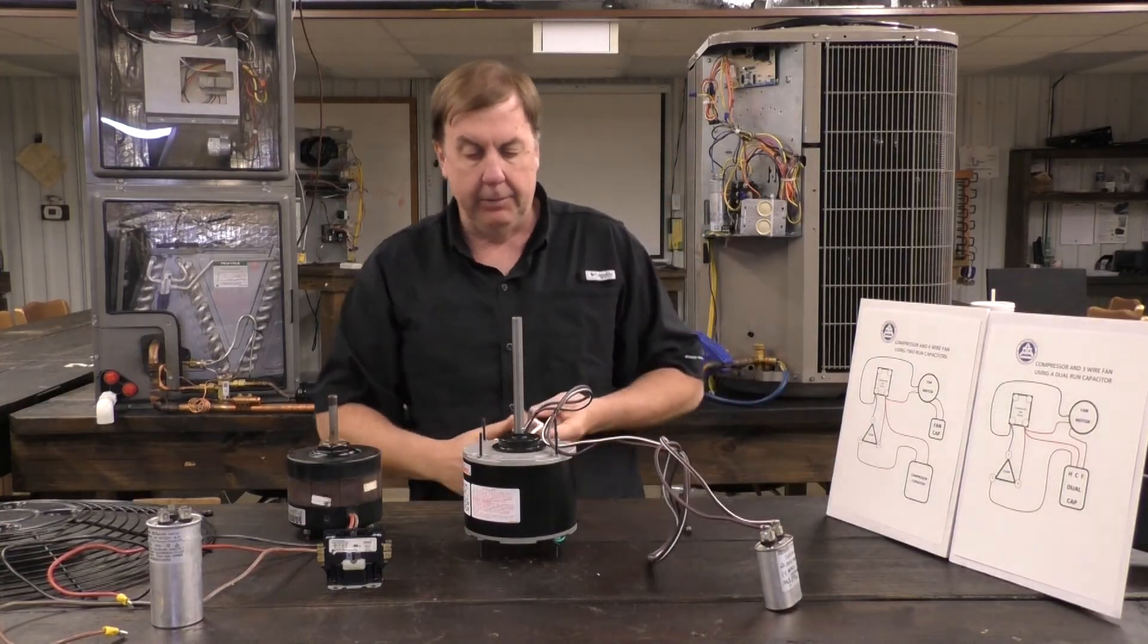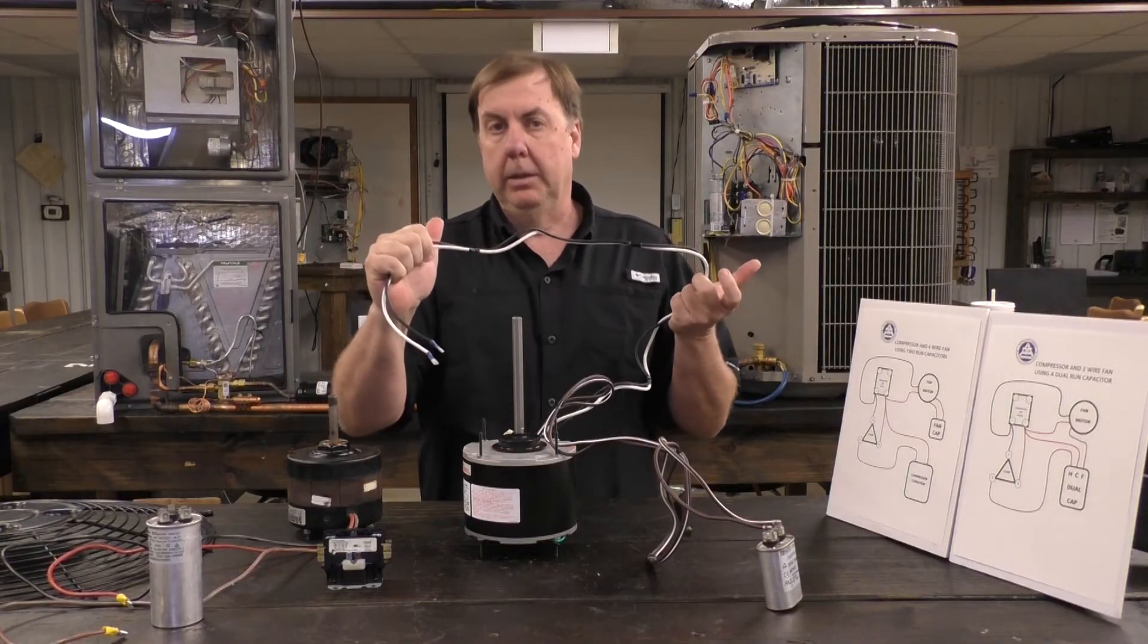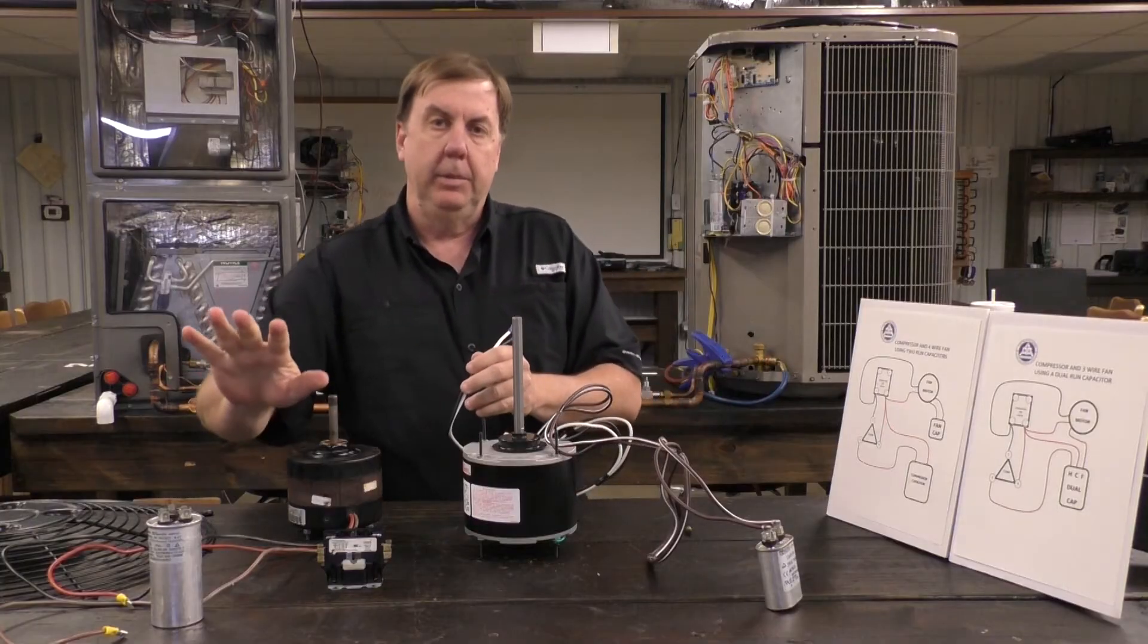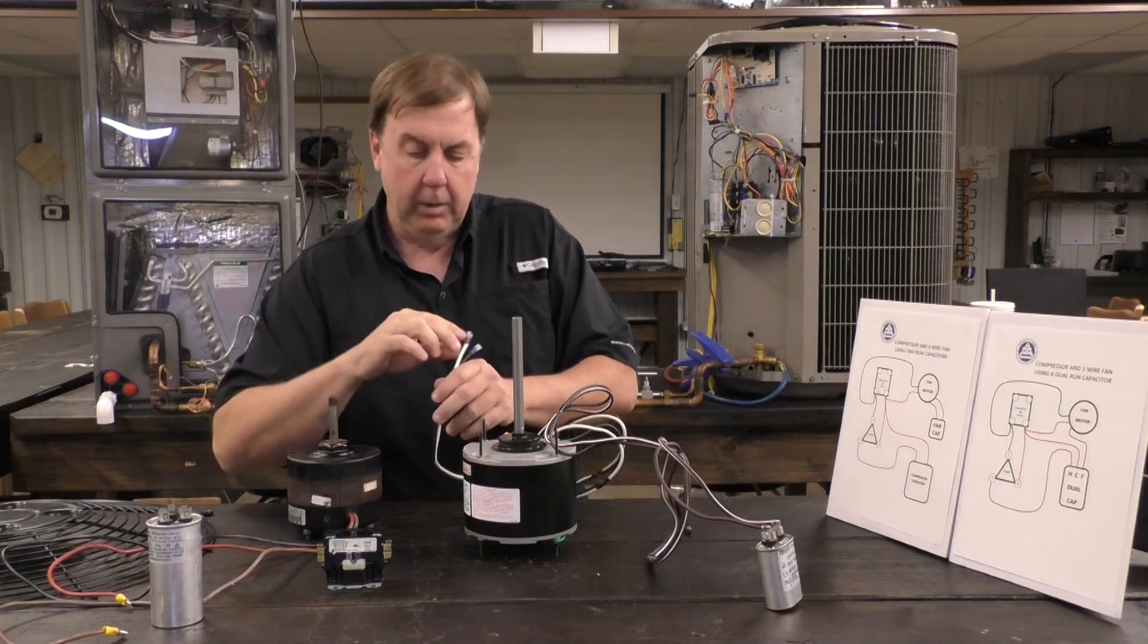Now we have two wires left on our new motor. These are the wires that are going to go to the contactor. Because we're through with the capacitor, it stays in there, it's going to be doing the compressor, but we're done. We've already moved our fan wire off. We're done.